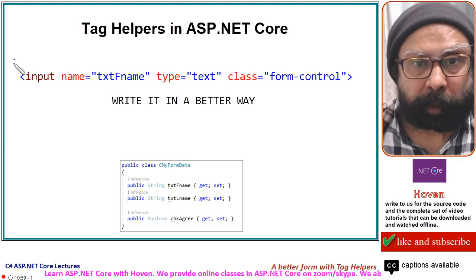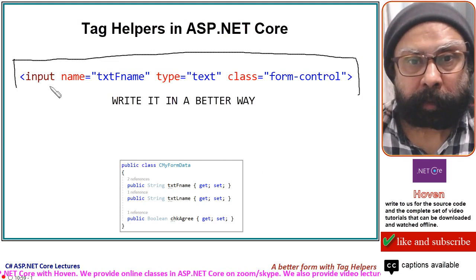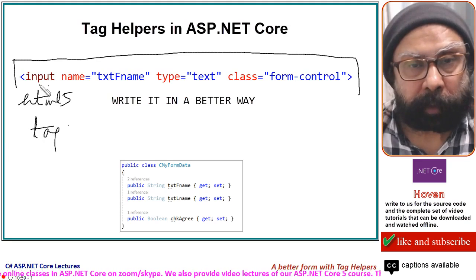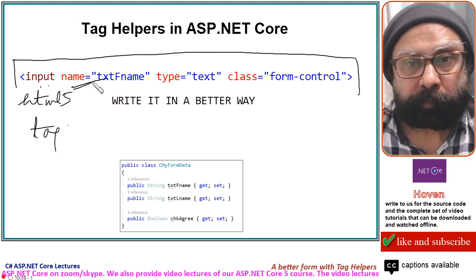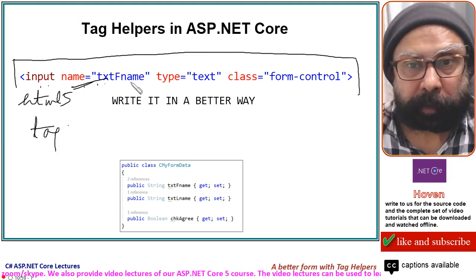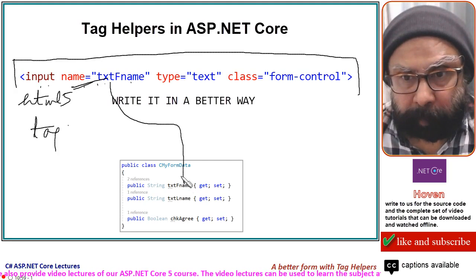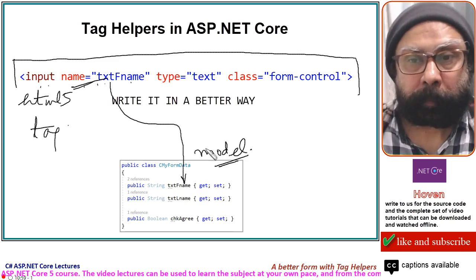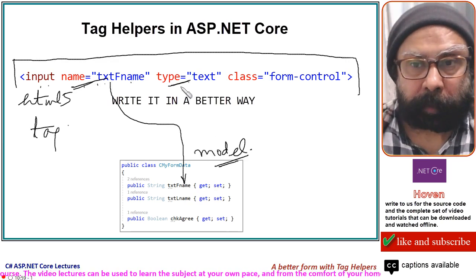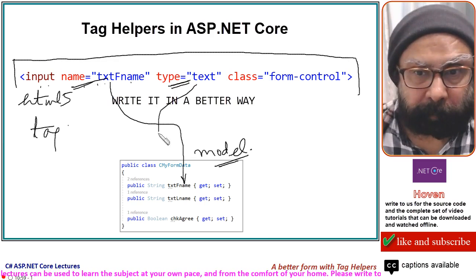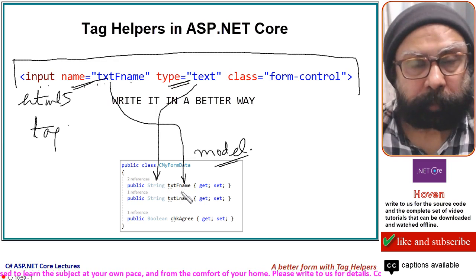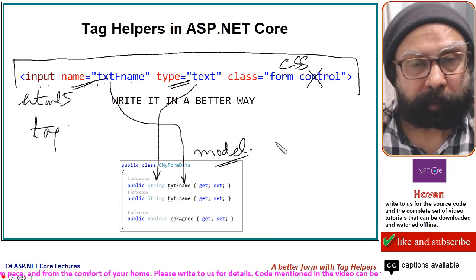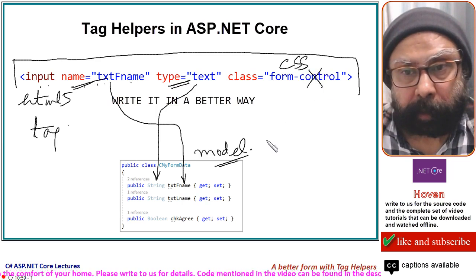Let me review the input tag we were using. This is the plain HTML5 tag for input. It had a name attribute — 'txtFName' — written to match the name of the property on the model. Then the type attribute was set to match the data type of the property, along with a CSS class.